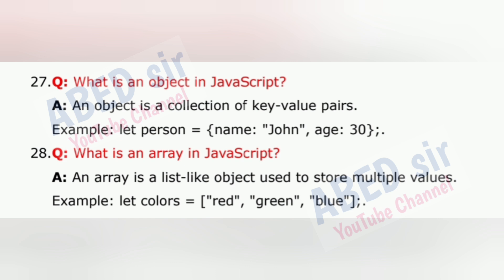Question 28: What is an array in JavaScript? An array is a list-like object used to store multiple values. Example: let colors = ['red', 'green', 'blue'].